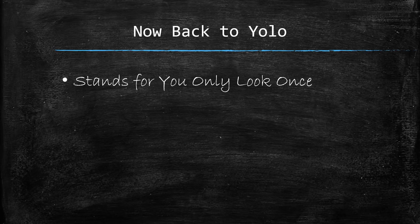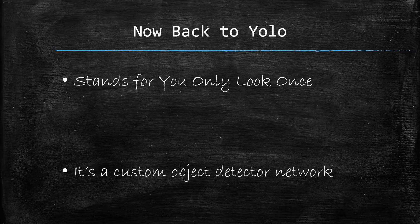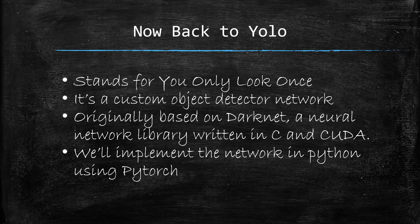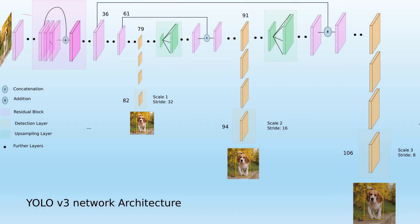YOLO stands for You Only Look Once. It is a custom object detector network originally based on darknet — a neural network library written in C and CUDA. The original YOLO network was built by the author of the research paper using darknet, but we will implement the network in PyTorch. Looking at the entire network architecture, there are many versions of YOLO version 3 such as tiny YOLO, so the number of layers doesn't matter, but the types of layers do matter.